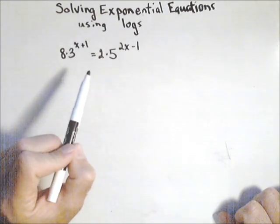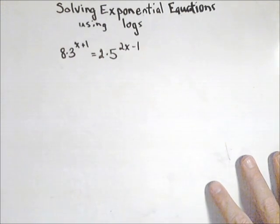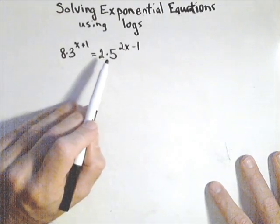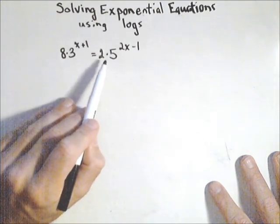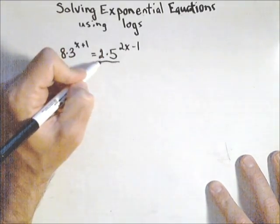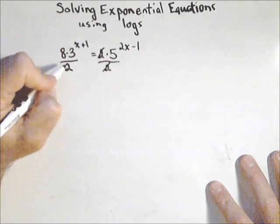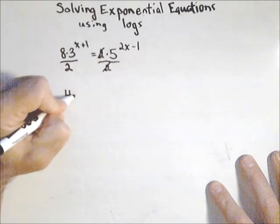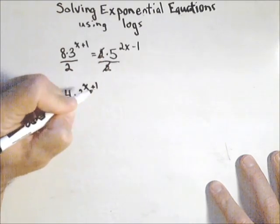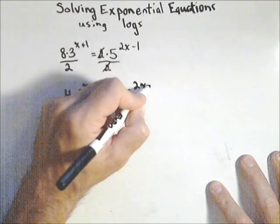Now I'm going to go through the algebraic solution so we can see how to do this with logs. So first thing we want to do, when possible, we would like to isolate the exponential piece. So we typically divide by any constant that's out front. Well, both of them have constants out front, so we're not going to be able to get rid of it, but we probably can get rid of one of them, so let's divide both sides by two. It will at least make our work a little bit easier, and that's going to reduce down to four times three to the x plus one equals five to the two x minus one.